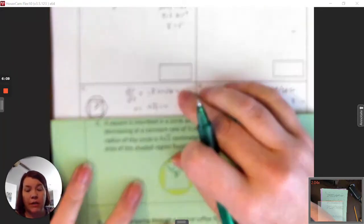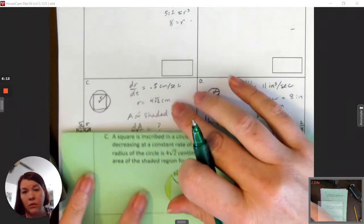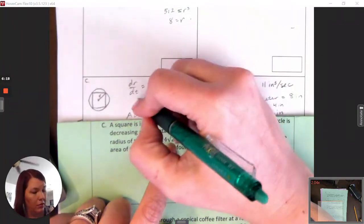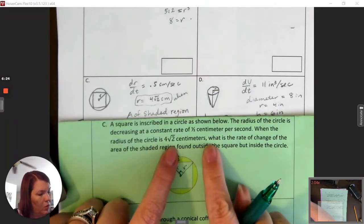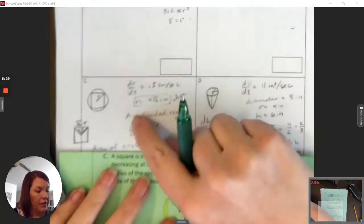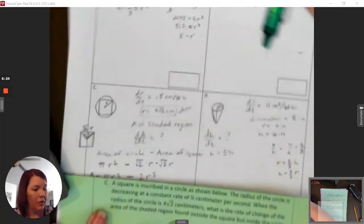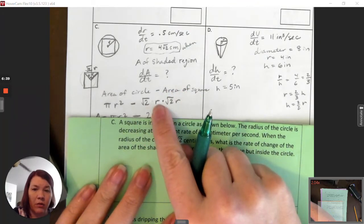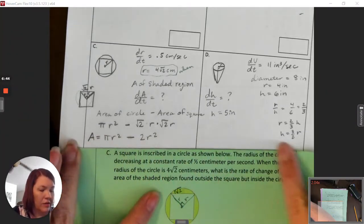So, dr/dt is 0.5 centimeters per second. r is equal to 4√2. That's in the problem. When the radius is. So, that's my when number. Again, it goes in jail. What is the rate of change of the area of the shaded region found outside the square, but inside the circle? So, I need to find area of the shaded region. So, I want dA/dt. And then I went ahead and set up an equation. So, area of the circle. Minus the area of the square. 2√r times 2√r. Which becomes this. And this is what I'm going to take the derivative of.